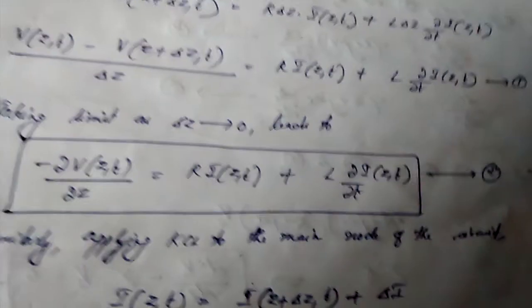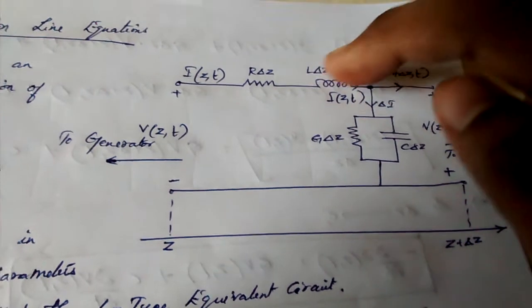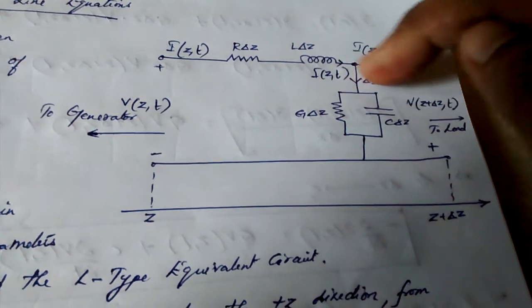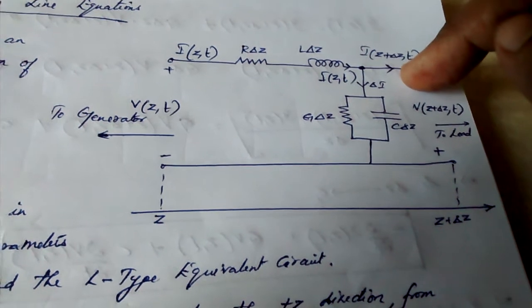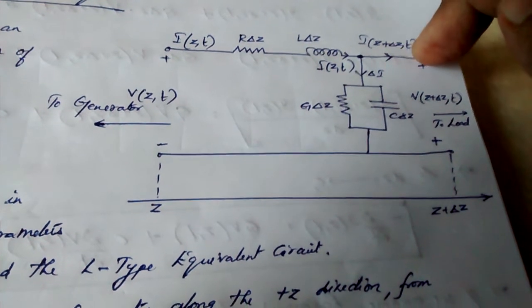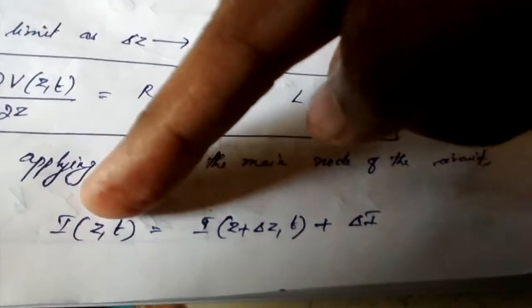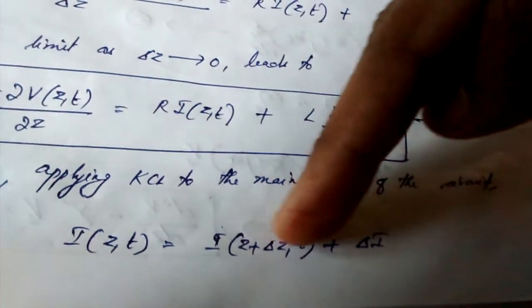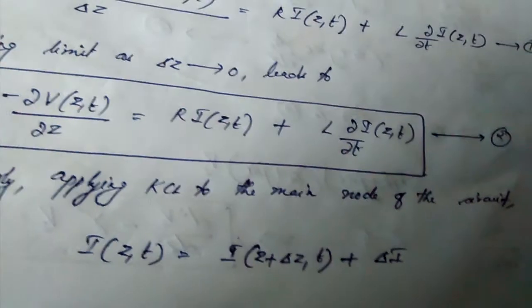Similarly, we will now apply KCL to this node. The incoming current is i(z, t). The outgoing currents are the shunt branch current delta i and i(z + delta z, t). Applying KCL: i(z, t) = i(z + delta z, t) + delta i.